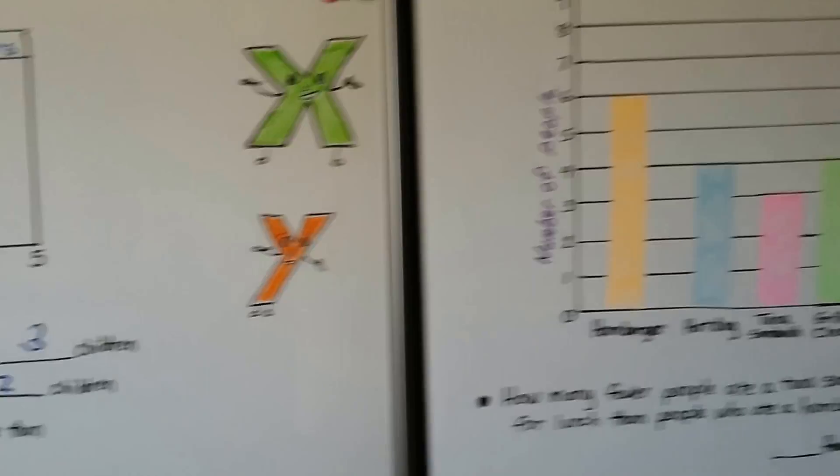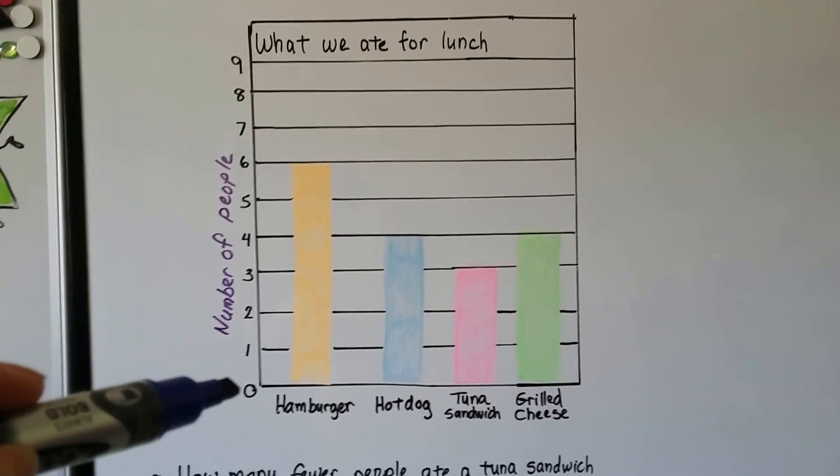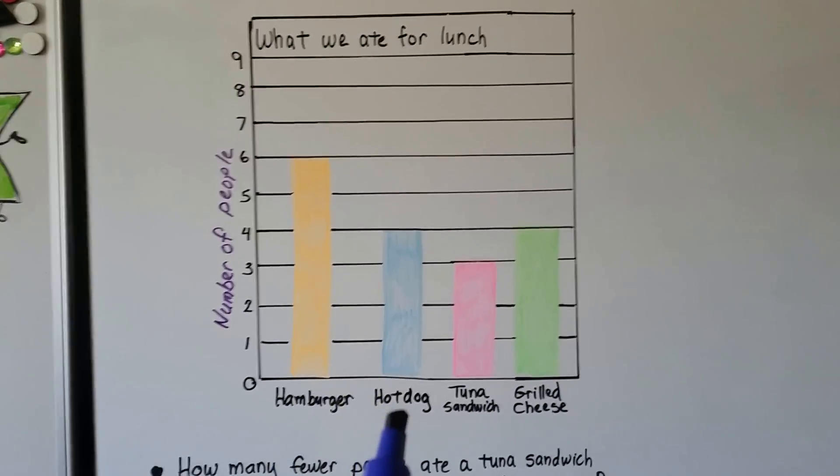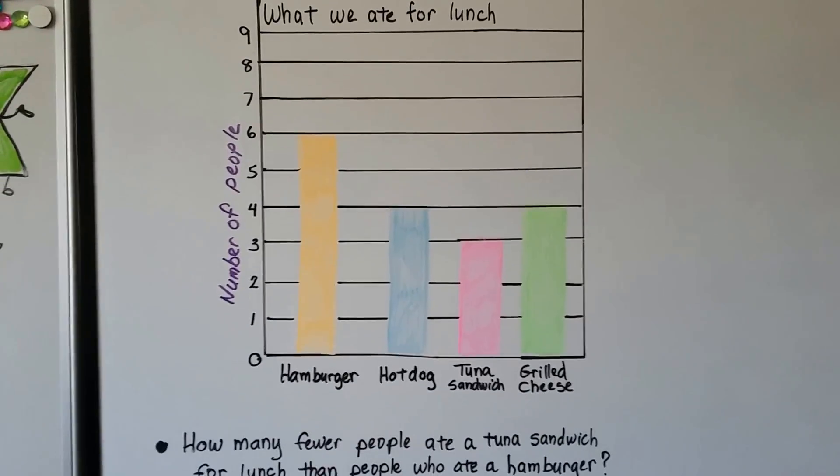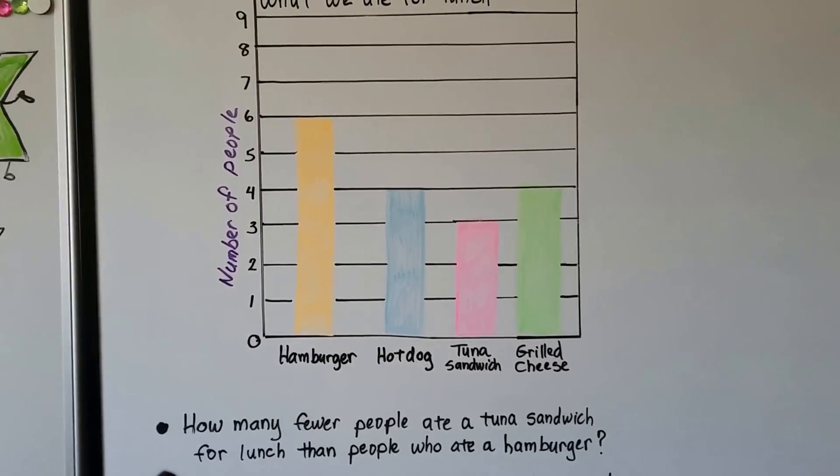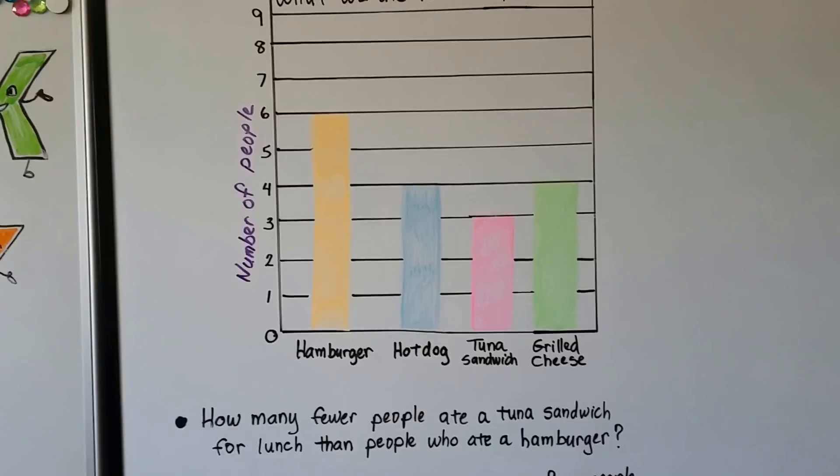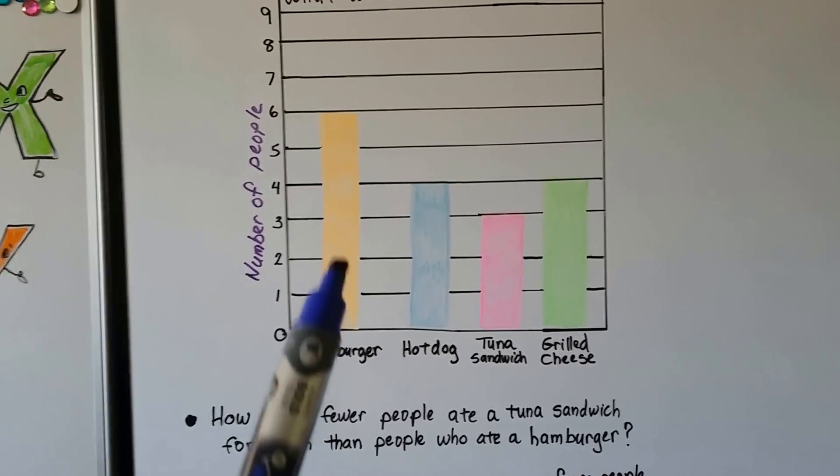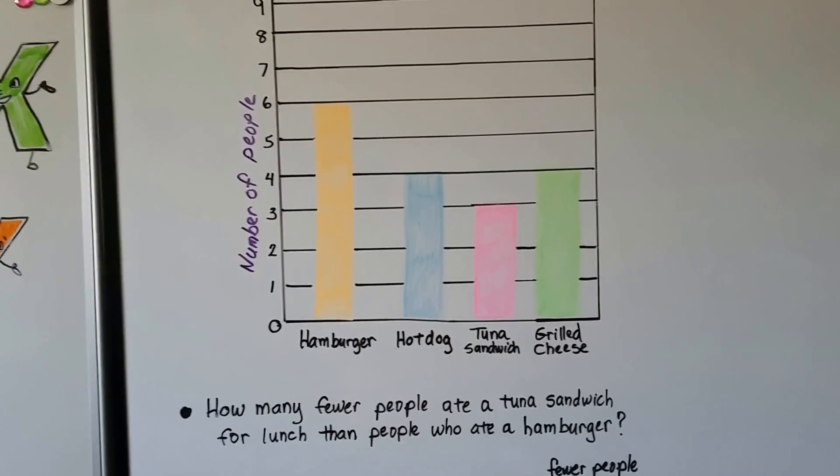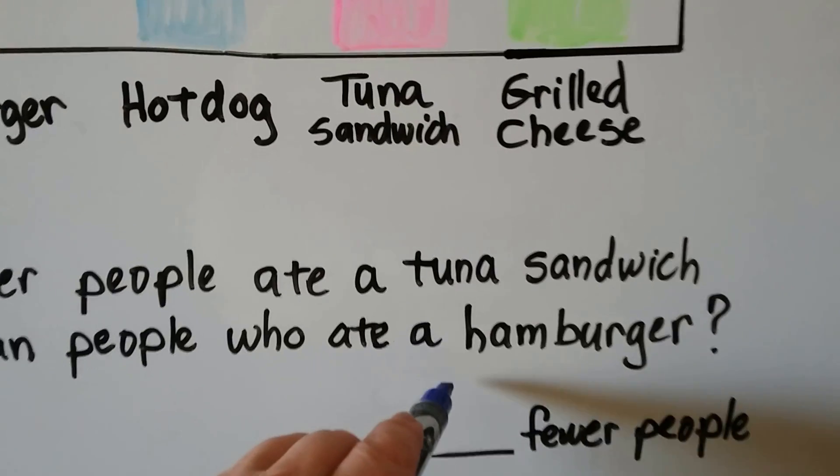We have one last one. This one's titled What We Ate for Lunch. We can see the scale goes from zero to nine. That's the number of people. Our choices are hamburger, hot dog, tuna sandwich, or grilled cheese. The question is, how many fewer people ate a tuna sandwich for lunch than people who ate a hamburger? We look at tuna sandwich. It stops here. We follow it to the scale, and that's a three. We look at hamburger to compare it. We follow it up. It goes to a six. This is a six, and tuna is a three. We can count from the scale: one, two, three.